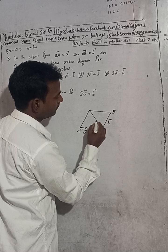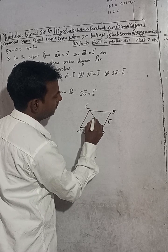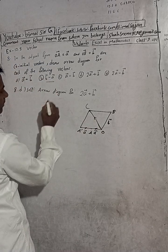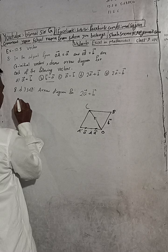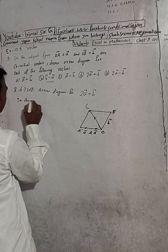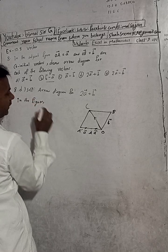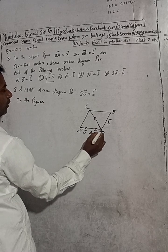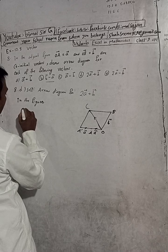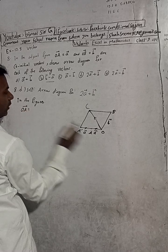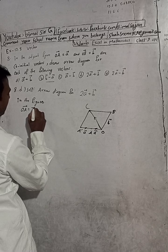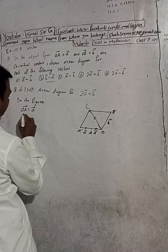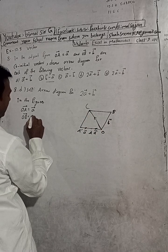Join this line — this is OC vector. Now, from the diagram, in the figure: OA vector is equal to A vector, OB vector is equal to B vector, and OC vector is equal to B vector.